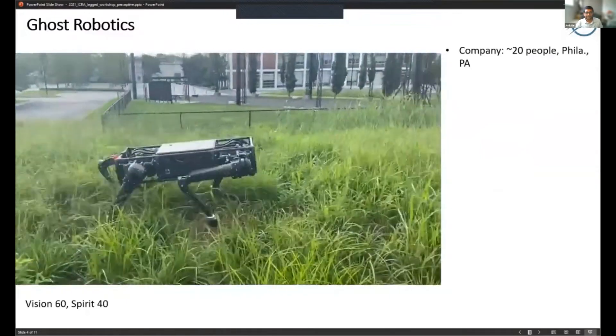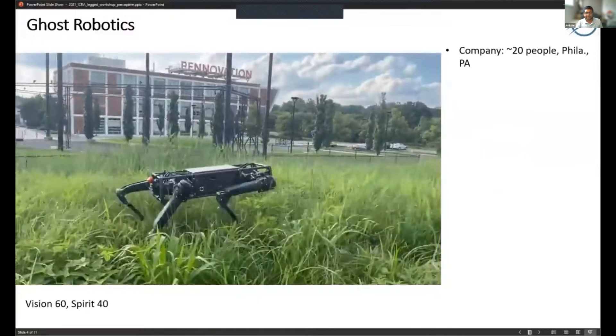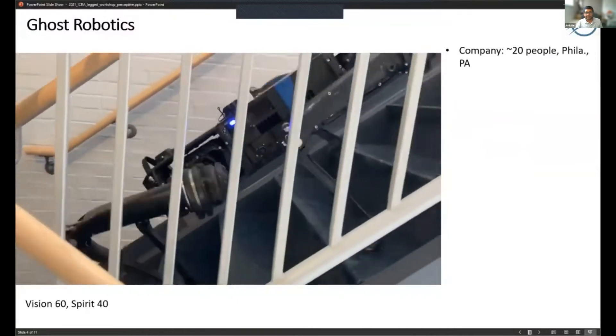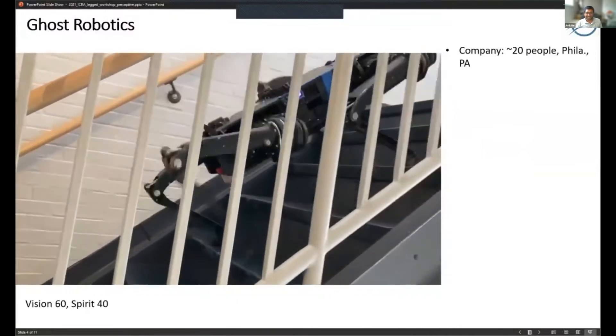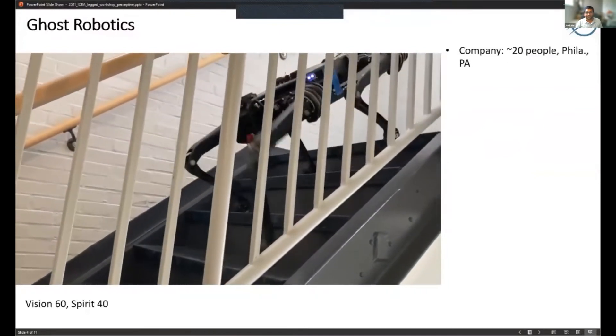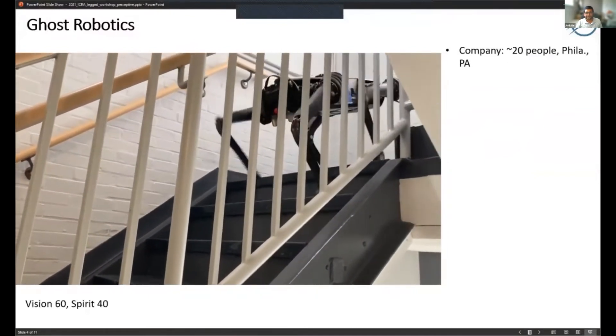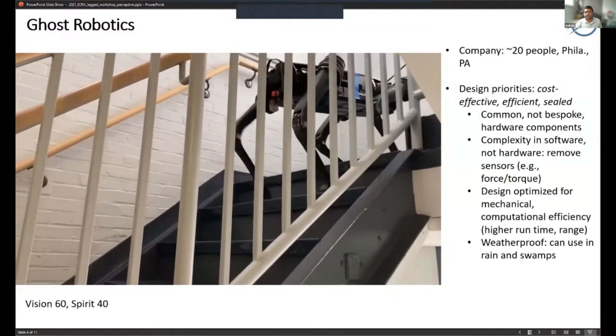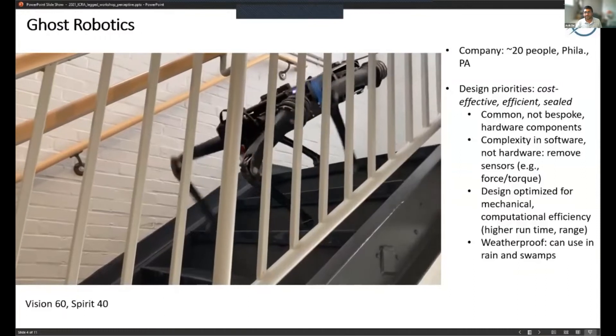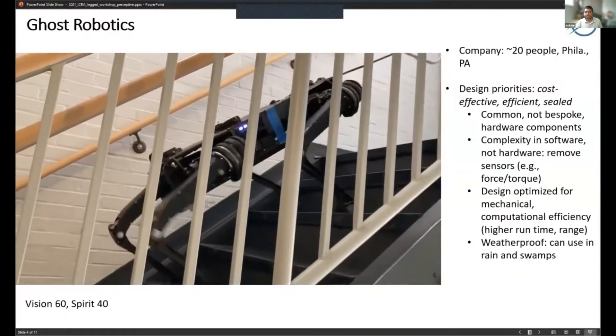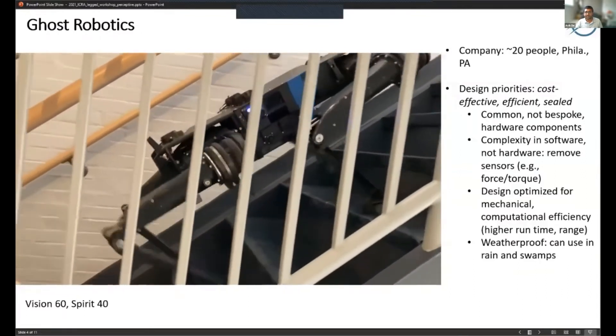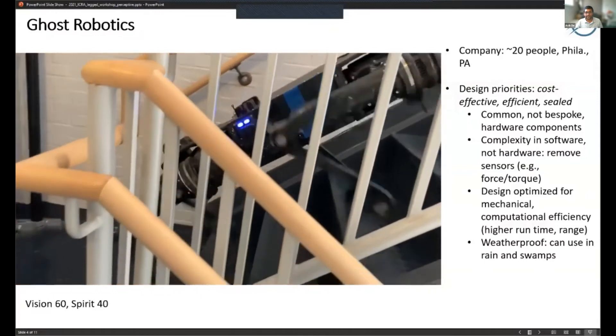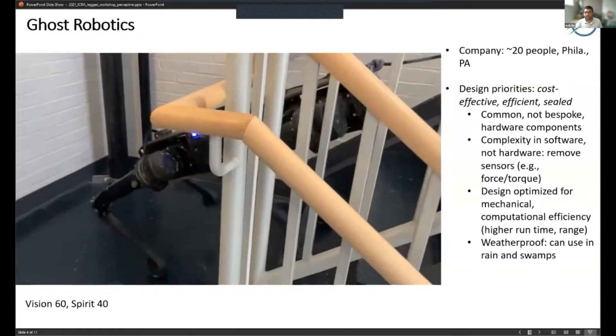We have two robots - this is the larger Vision 60 quadruped. It's been sized approximately so that it's easy to climb stairs as you can see. It weighs about 43 kilograms. Our design priorities were to have something that's pretty cost effective, efficient, and sealed.